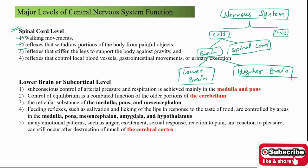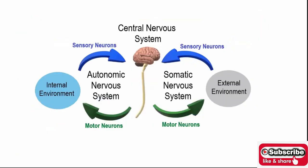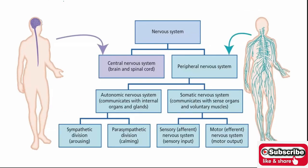Further spinal cord functions include: stiffening the leg to support the body against gravity, and controlling local blood vessels, gastrointestinal movement, and urinary excretion. So spinal cord level functions include reflex withdrawal from painful objects, postural support against gravity, and control of visceral organs.